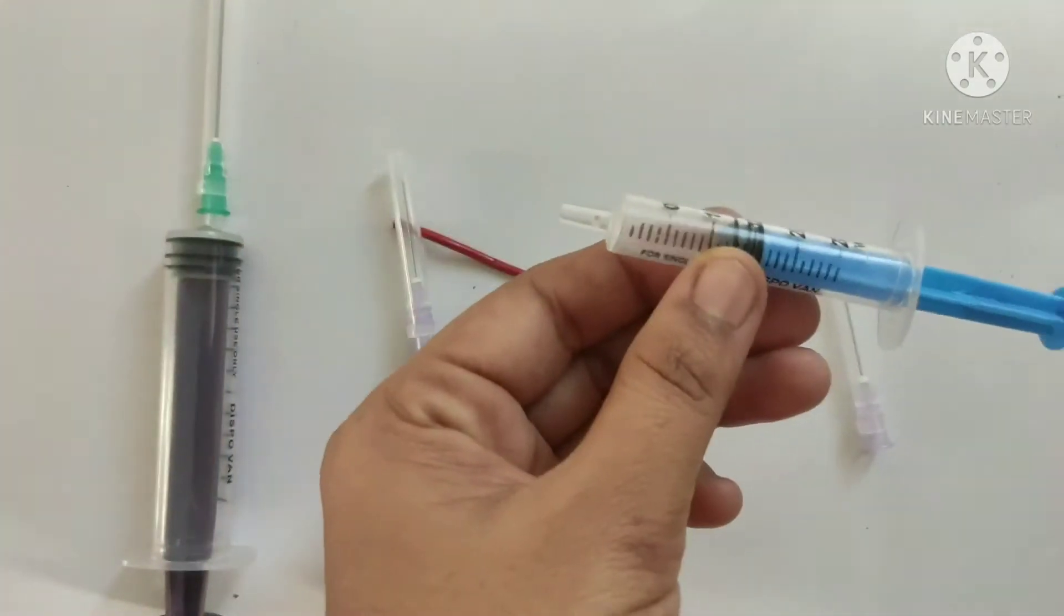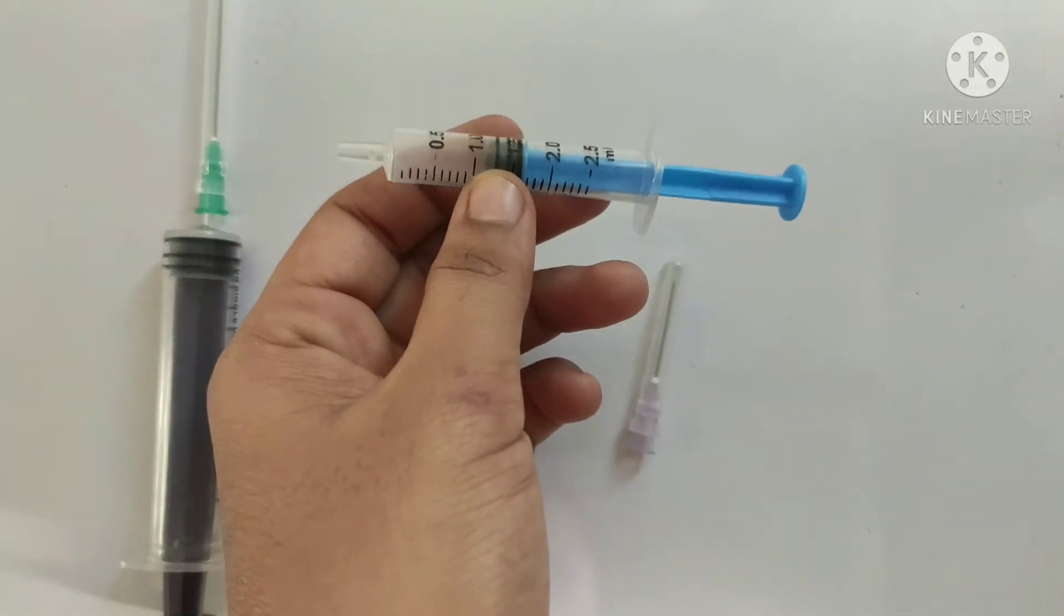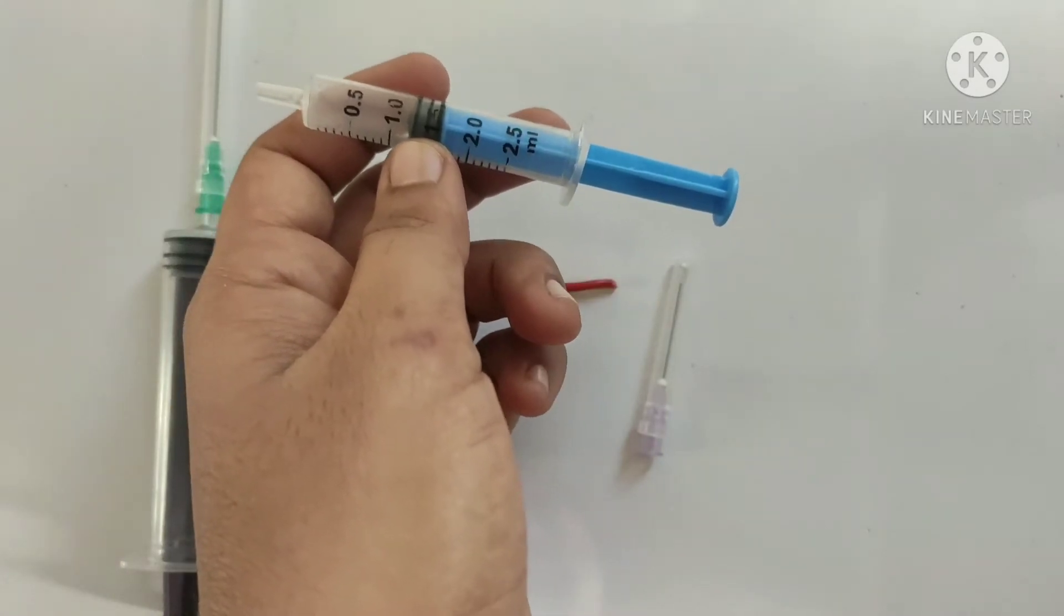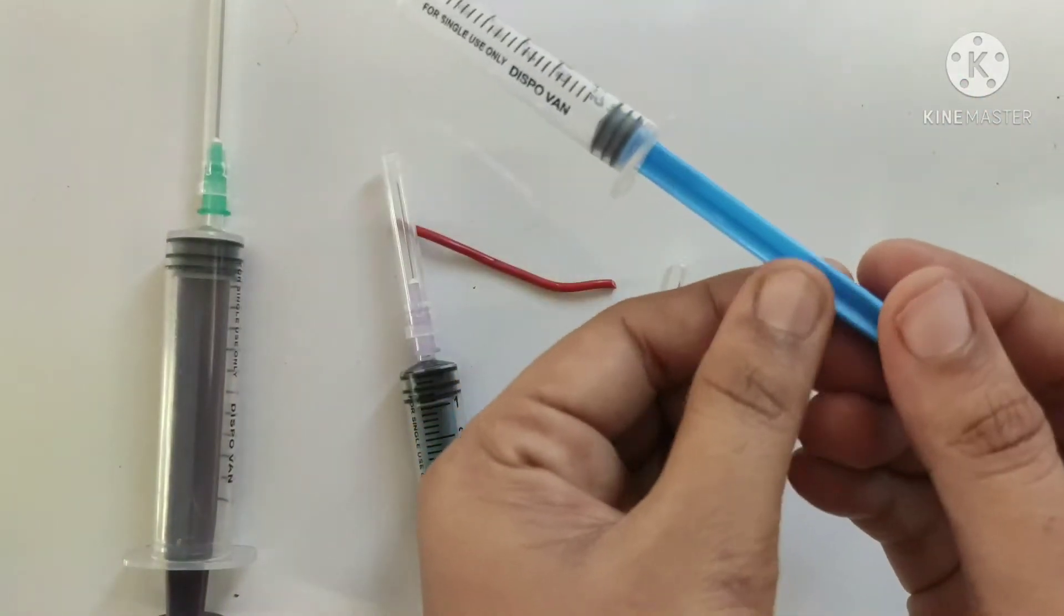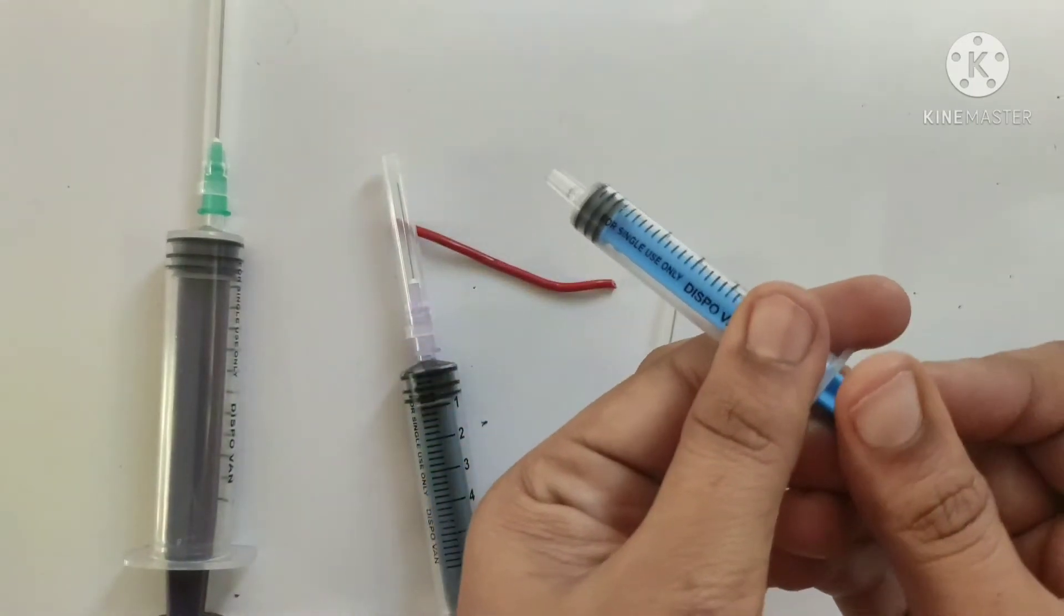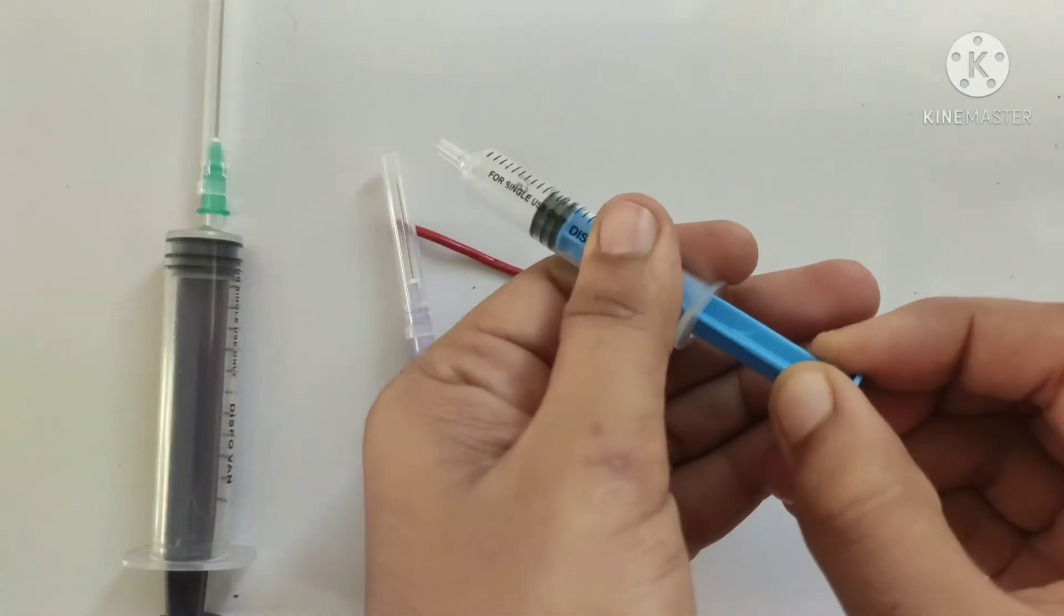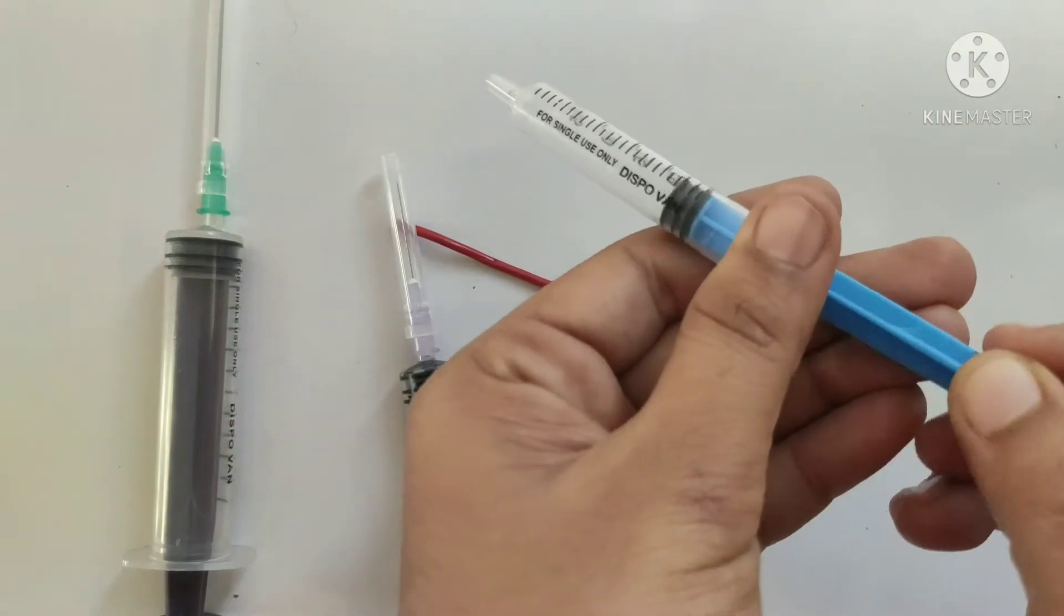This part is known as syringe. It is made up of three parts. This is known as plunger. Normally it is in this way. By pulling this, we can fill the drug within the syringe.